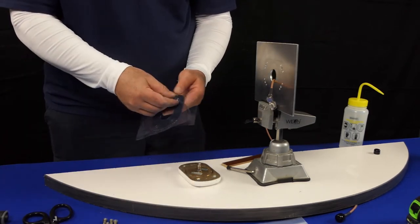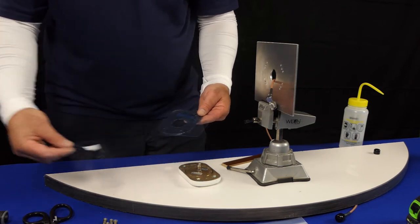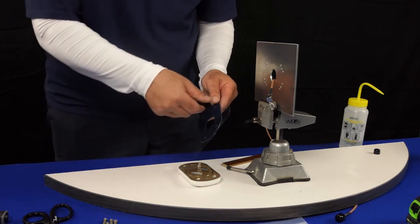Verify that fastener holes and connector cutouts in the gasket will align with the antenna when positioned for installation. Trim the perimeter of the gasket flush with the antenna if needed.